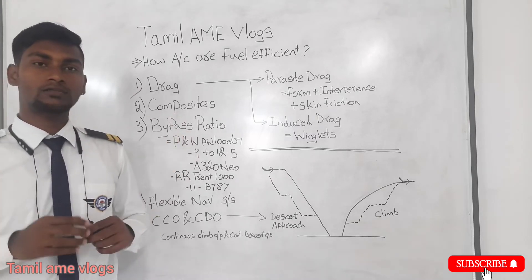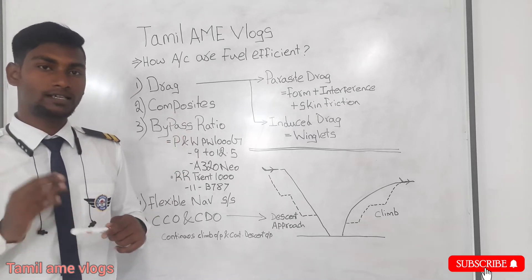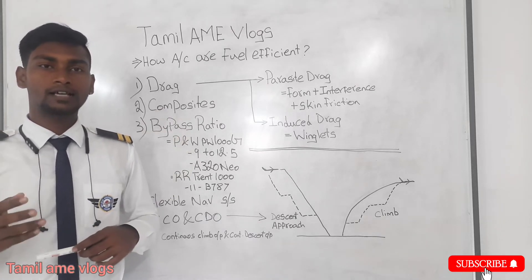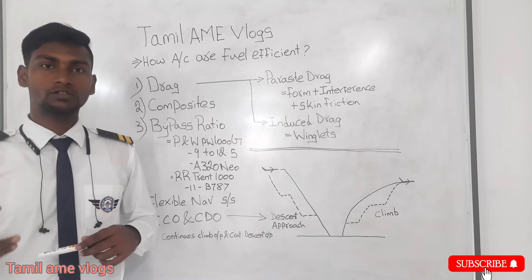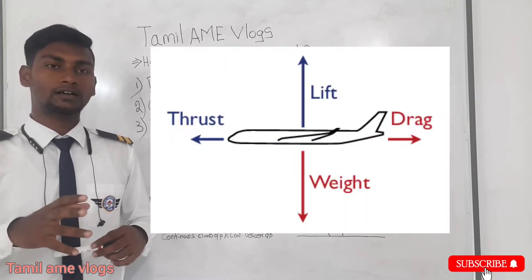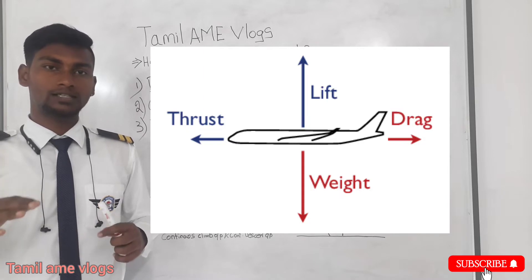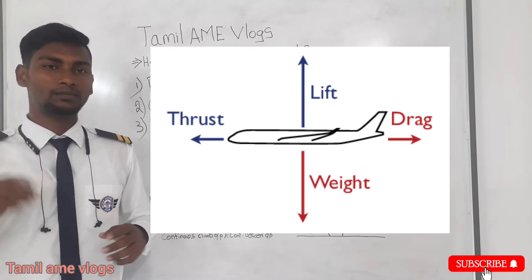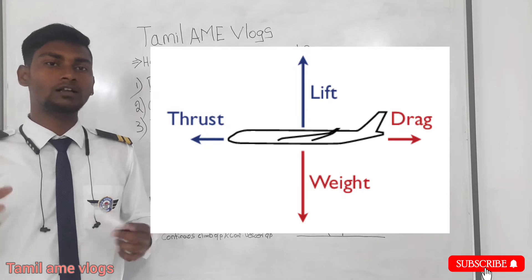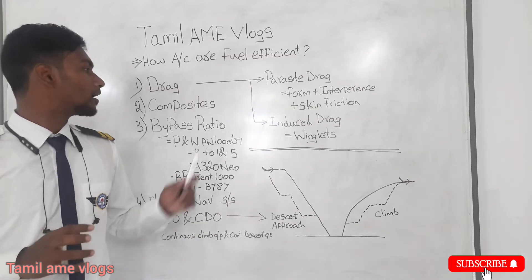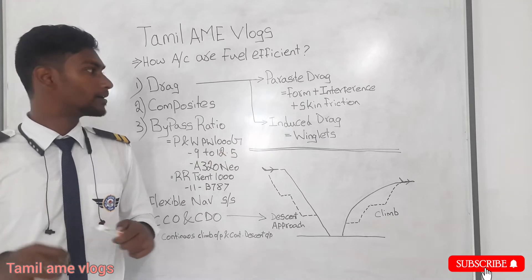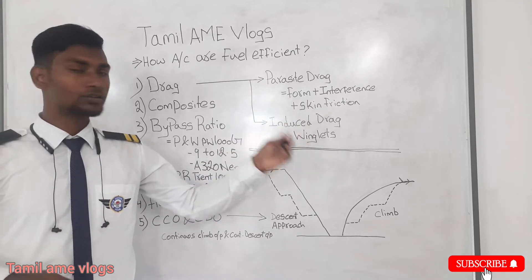The first and foremost reason for aircraft to be fuel efficient is drag. Drag is the opposite force, or reaction force, to thrust. Thrust is a forward force and drag is a force which opposes the aircraft while flying — simply put, drag is a pulling or opposing force. There are mainly 2 types of drag in an aircraft: parasite drag and induced drag.